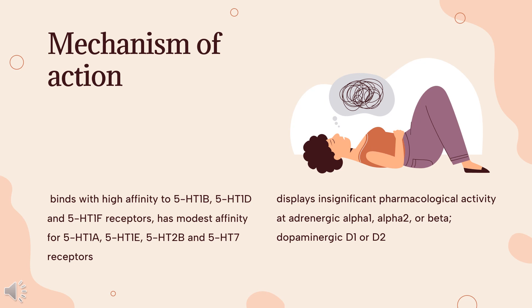Migraine-associated nausea and vomiting are thought to arise from activation of central nociceptive sensory neurons that project to autonomic brainstem nuclei and higher subcortical and cortical pain processing centers. An imbalance in serotonin (5-HT) levels has also been documented. 5-HT binds to 5-HT1B and 5-HT1D receptors to promote trigeminal neuronal firing and vasoconstriction. Rizatriptan is a selective agonist at the 5-HT1B and 5-HT1D receptors on intracranial blood vessels and sensory nerves of the trigeminal system.